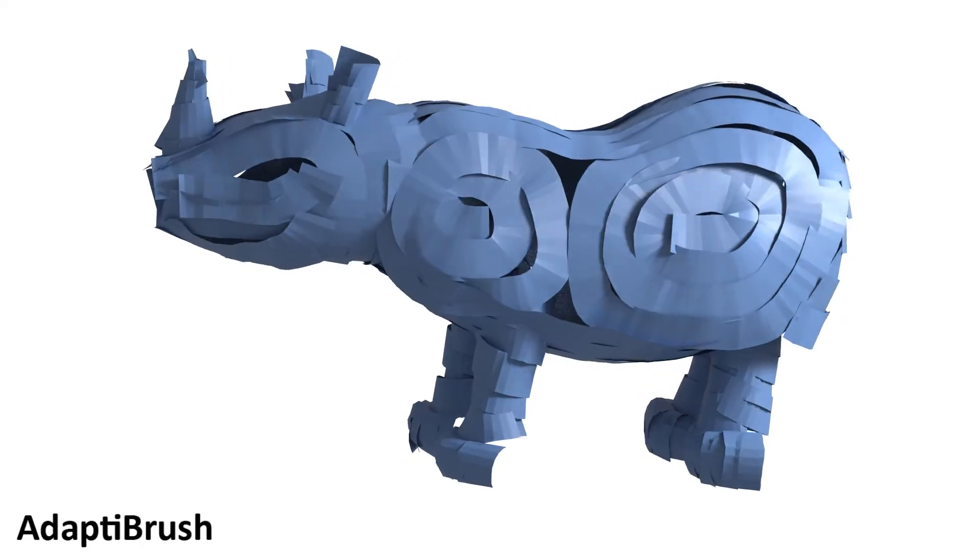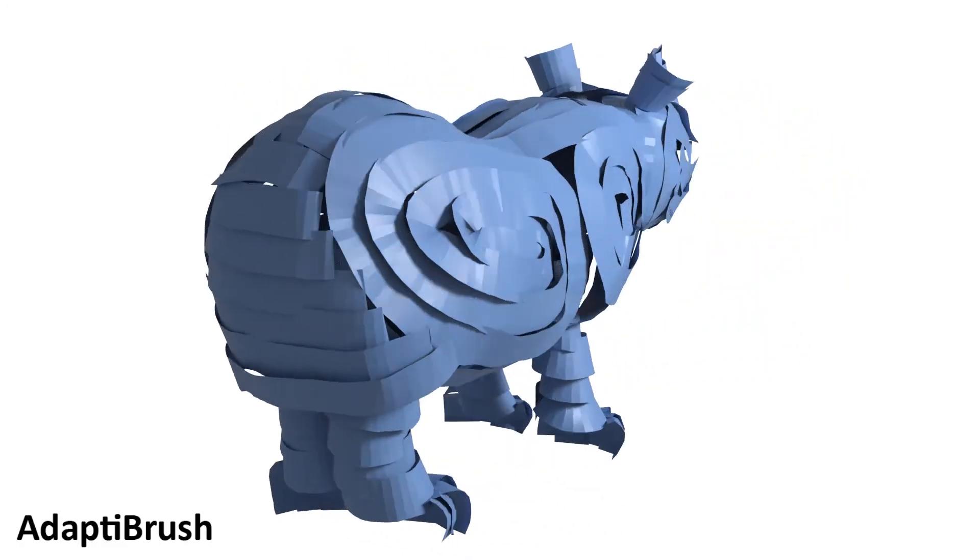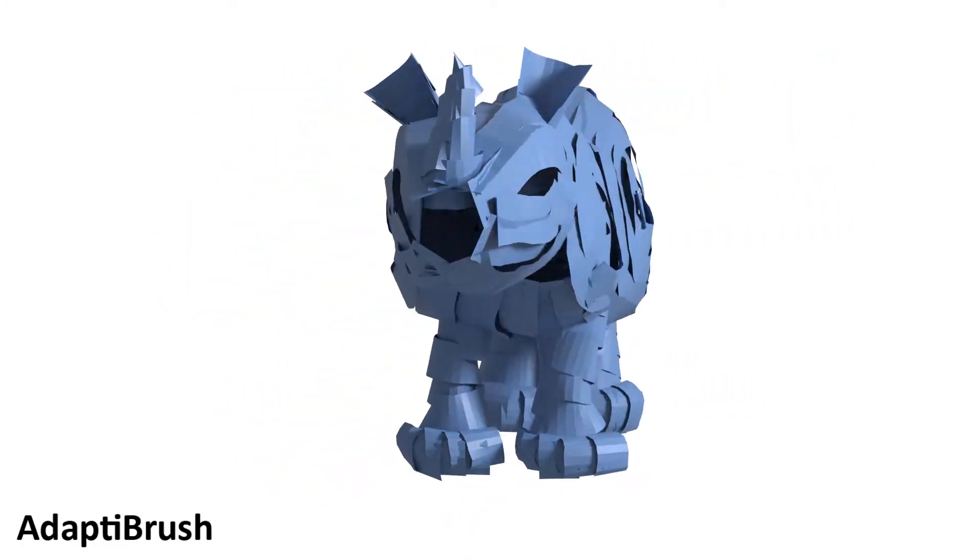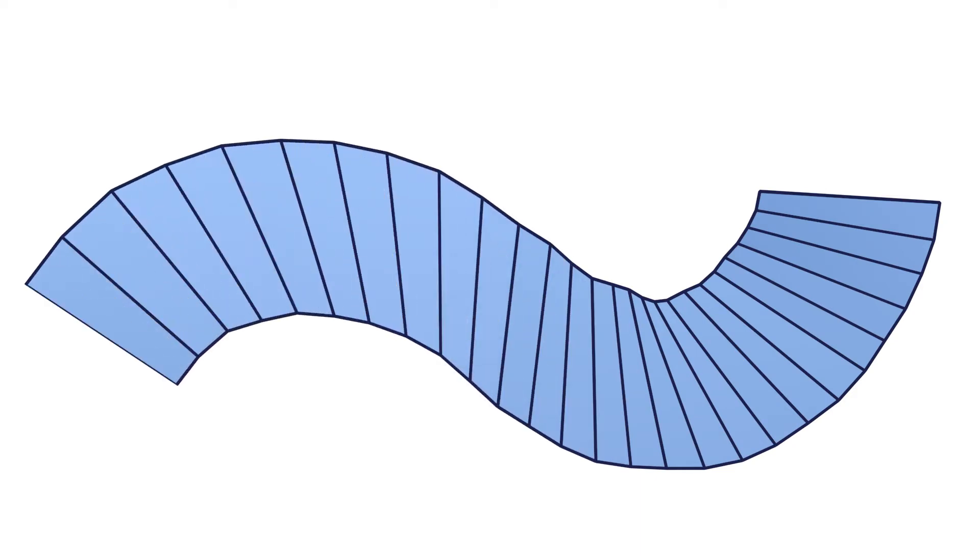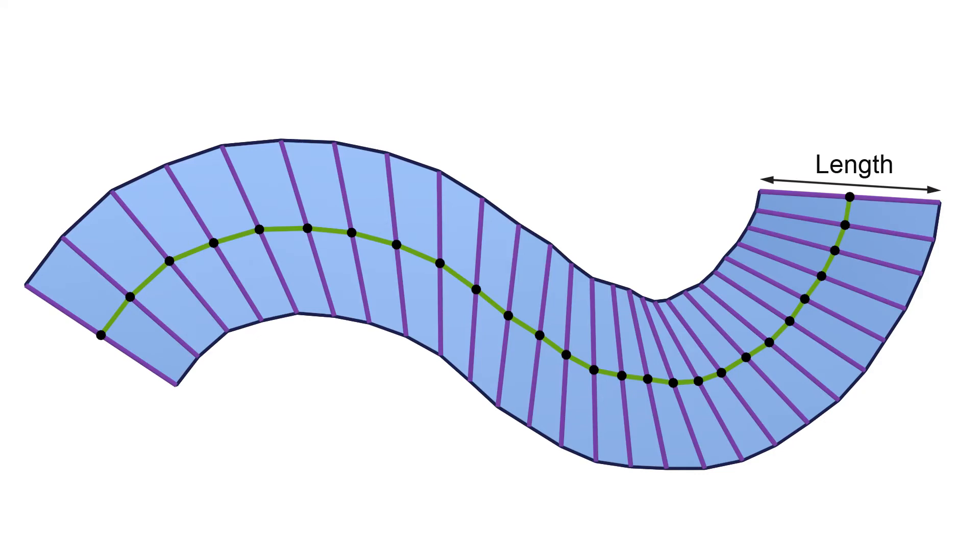Virtual reality drawing applications enable users to draw 3D shapes using virtual brushes that form ribbon-shaped strokes. Each ribbon is a ruled surface and is uniquely defined by a user-specified ruling length, a path, and the ruling directions at each point along this path.